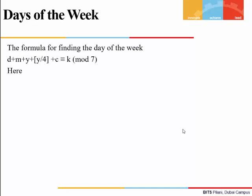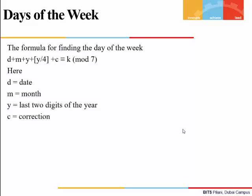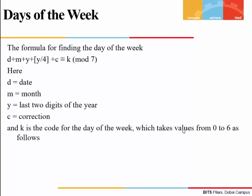To find the day of the week, we solve the formula: d + m + y + ⌊y/4⌋ + c, and whatever value we get, we find what it is congruent to mod 7. Here, d is the date, m is the month code, y is the last two digits of the year, c is the correction, and k is the code for the day of the week, taking values from 0 to 6.